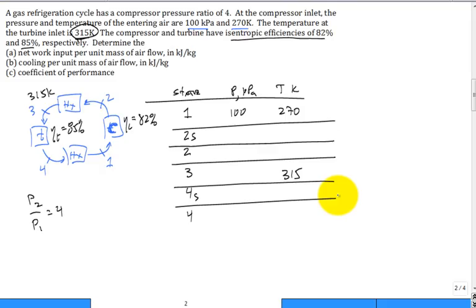Who wants to suggest a strategy for solving this problem because we need to calculate the net work per unit mass of airflow? Let's get all the pressures. That's a good one. Get all the pressures first, so fill up this table. What about the pressure at state 2? 400, 400, 400, 100, 100. Perfect.